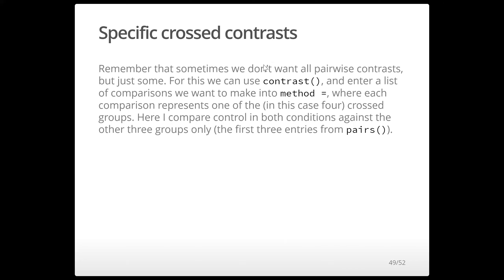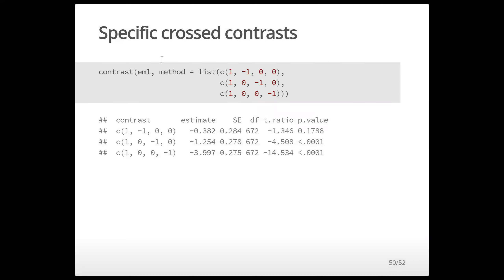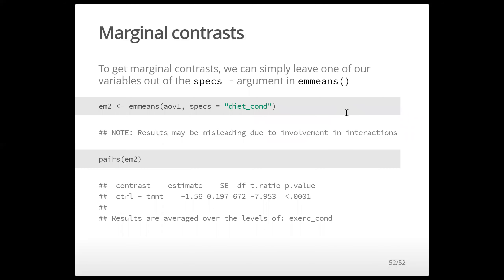Sometimes we don't want all pairwise contrasts, so we use 'contrast' and enter a list of comparisons into the 'method' argument, where each comparison represents one of the four crossed groups. For example, comparing control-control versus treatment-control, control-treatment, and treatment-treatment. For marginal contrasts, we just include one grouping variable in the 'specs' argument — though we'll get a warning that this may be misleading due to interaction. If the interaction is significant, you wouldn't usually interpret this. This gives pairwise contrasts between control and treatment for diet at the average of exercise.